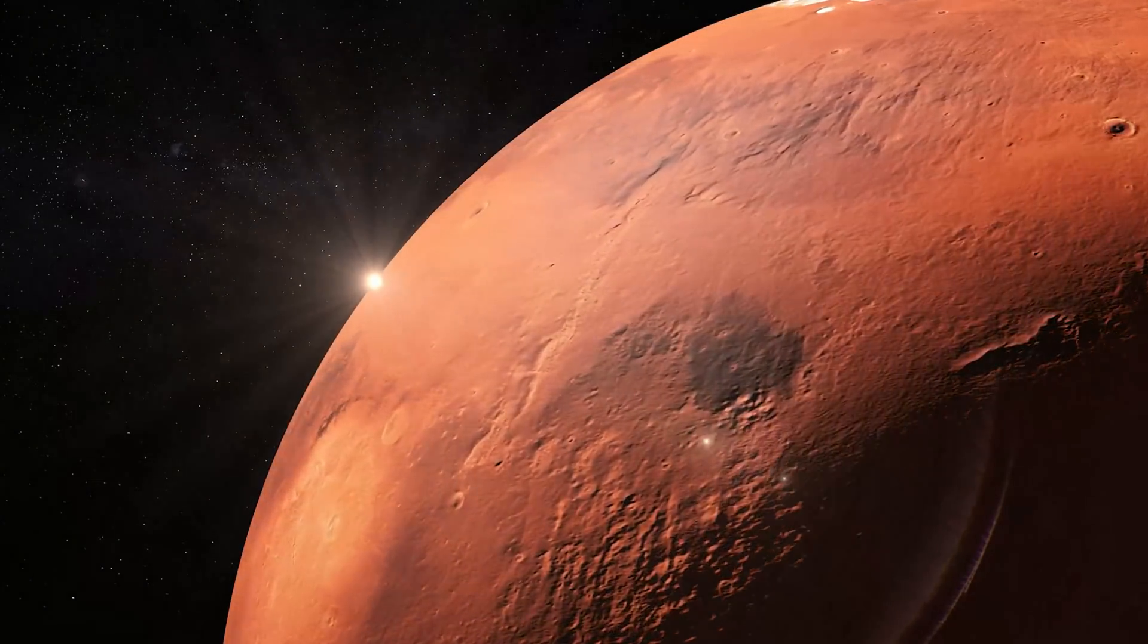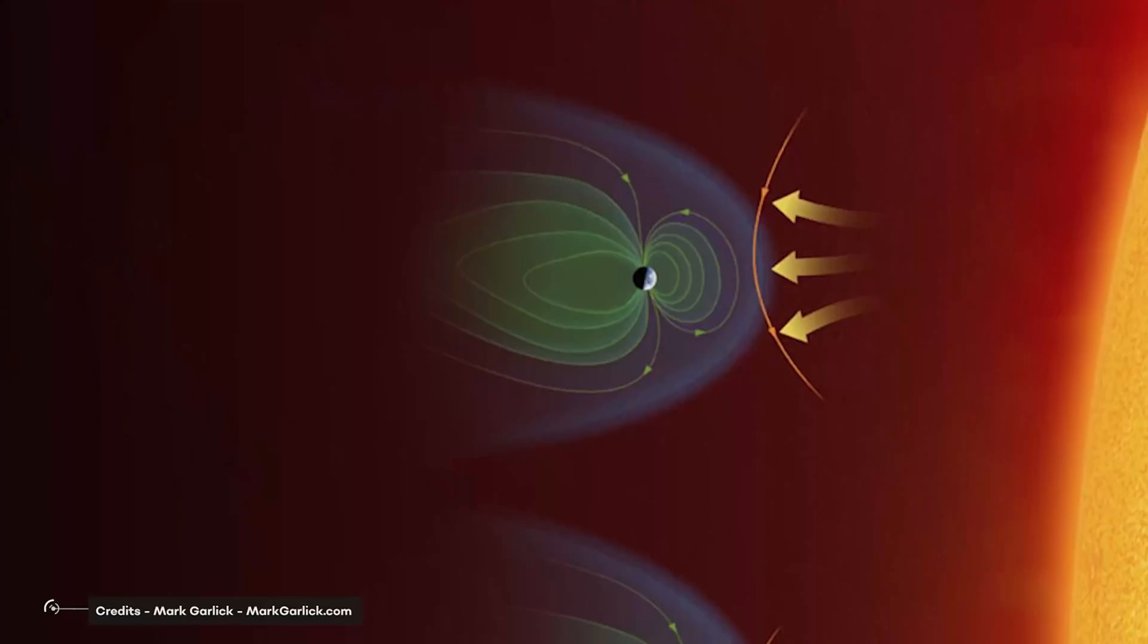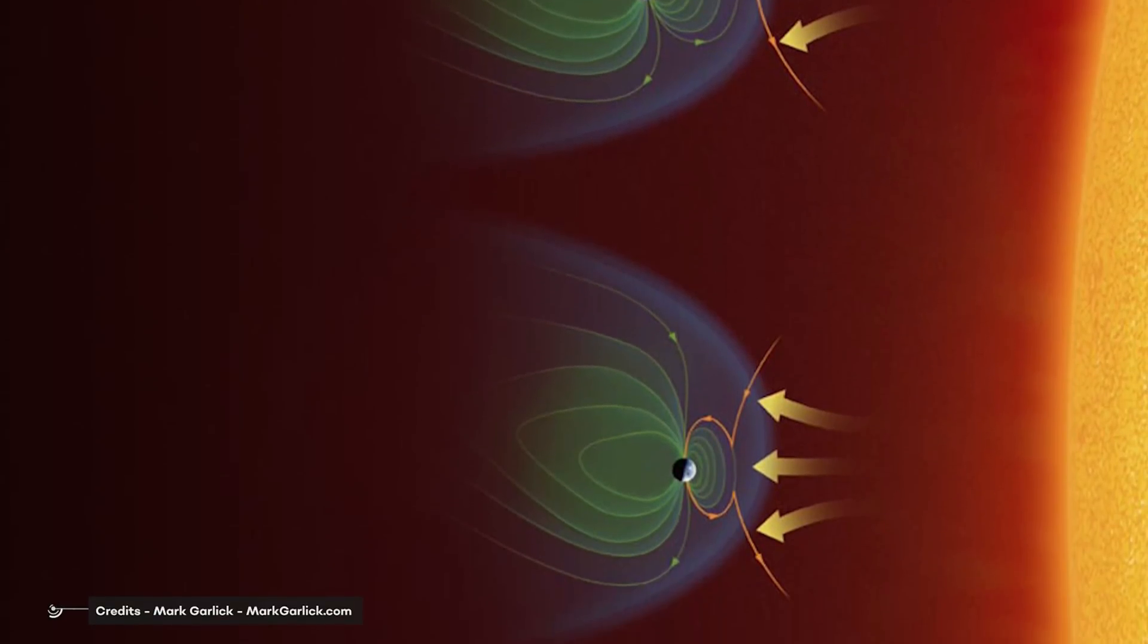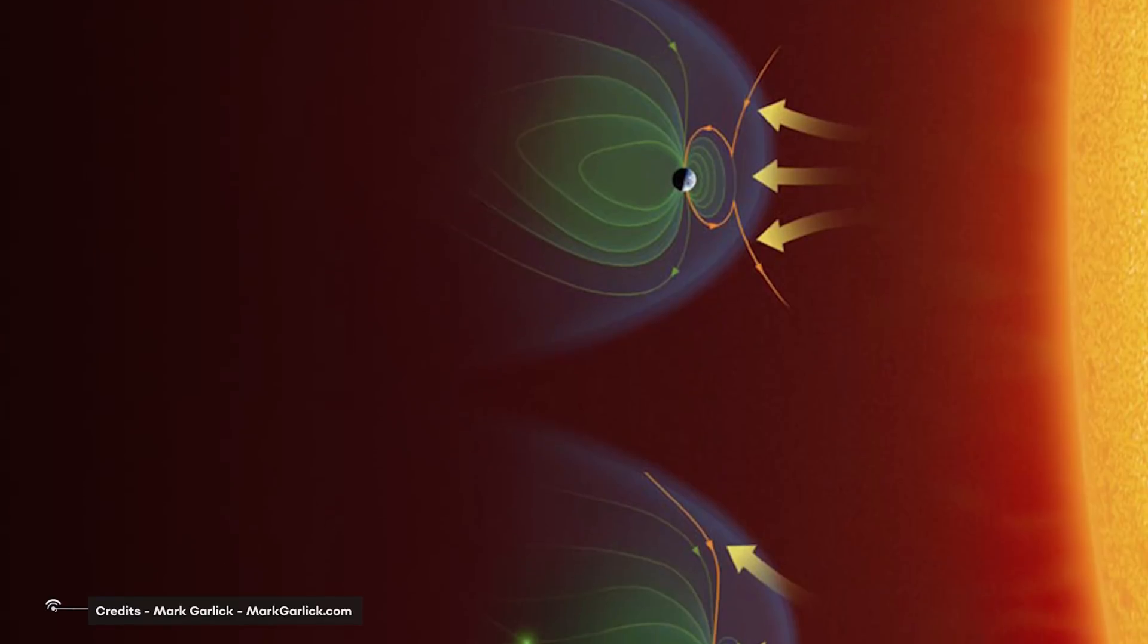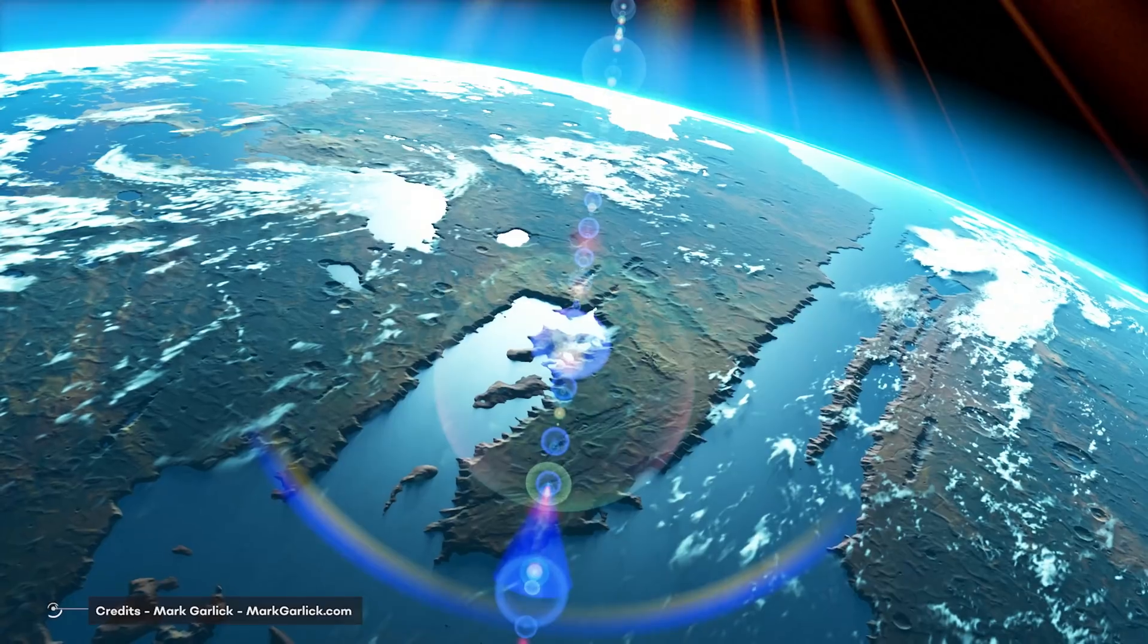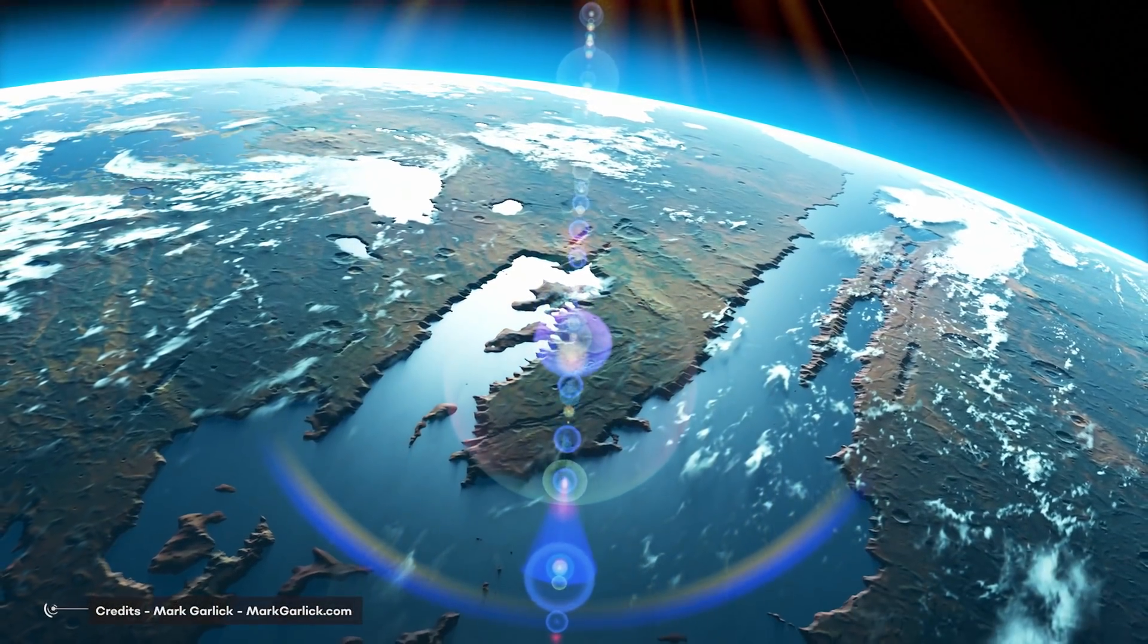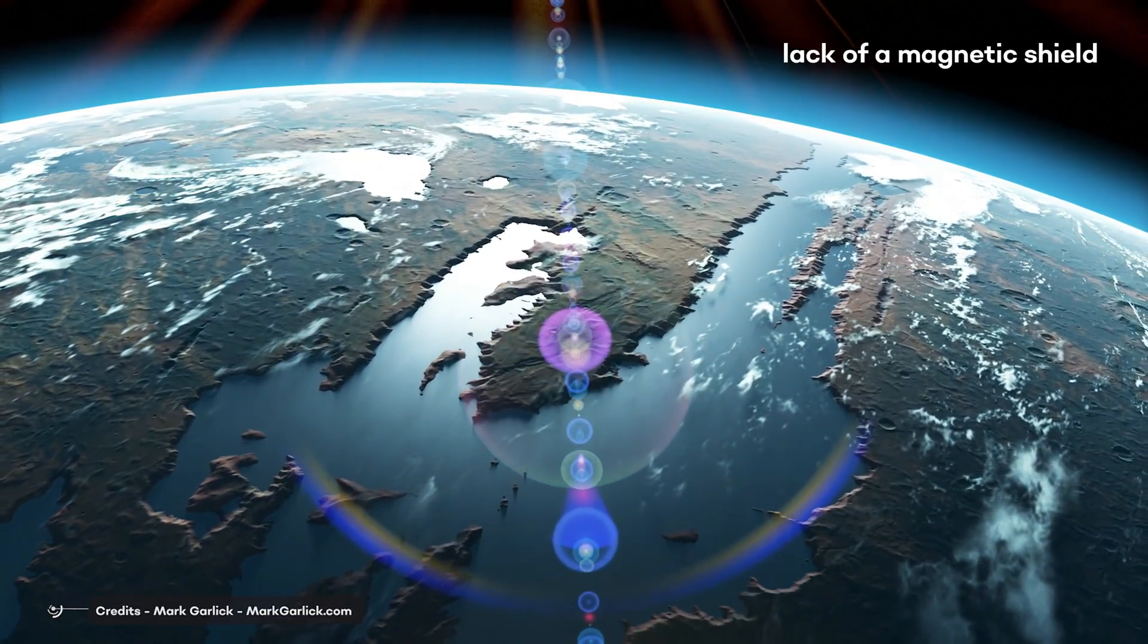The reason magnetic fields are so important is that they protect a planet from the harmful effects of solar wind. Earth's magnetic field prevents most high-energy particles from the Sun from reaching and sterilizing our planet's surface, and prevents the solar wind from tearing and scattering the atmosphere into space. Mars also probably once had a dense, water-rich atmosphere, which was then gradually dispersed precisely because of the lack of a magnetic shield.